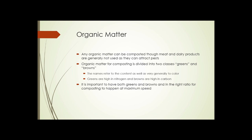That is divided into two classes called greens and browns. The names refer to the content of the organic matter as well as the color. Greens are high in nitrogen. Browns are high in carbon. It's important to have both greens and browns in the right ratio to get composting to happen at maximum speed. Why is that?